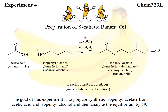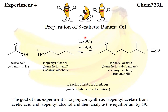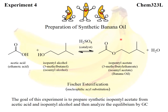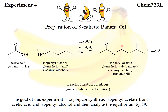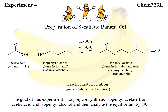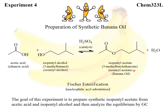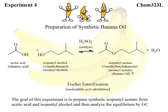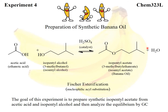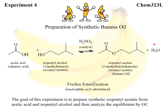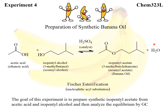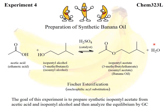We're also going to add a little bit of sulfuric acid as a catalyst. Our product is going to be isopentyl acetate, known by a few other names: 3-methylbutylethanoate, isoamyl acetate, and banana oil. One of the products is also going to be water in this reaction.